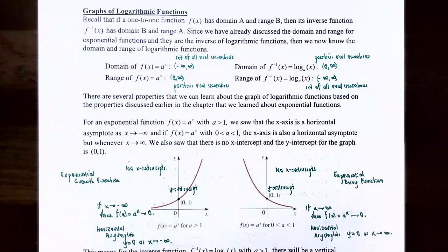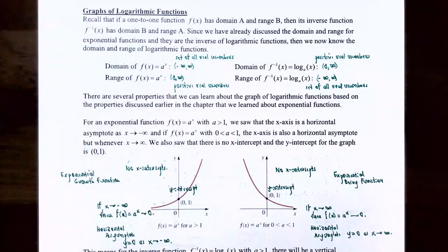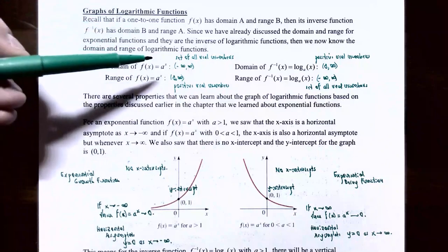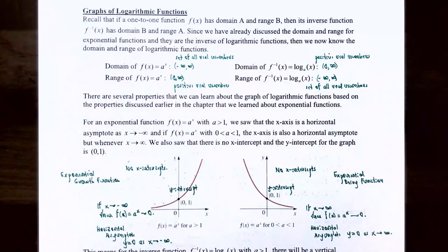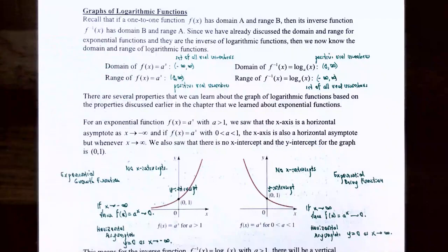Since we've already discussed the domain and range for exponential functions, and they are actually the inverse function for logarithmic functions, we actually know the domain and range of logarithmic functions as well. Recall that the domain of f of x equals base a raised to the x exponent — the domain of an exponential function was the set of all real numbers, or negative infinity to infinity. And the range of f of x equals base a to the x was zero to infinity, or the positive real numbers.